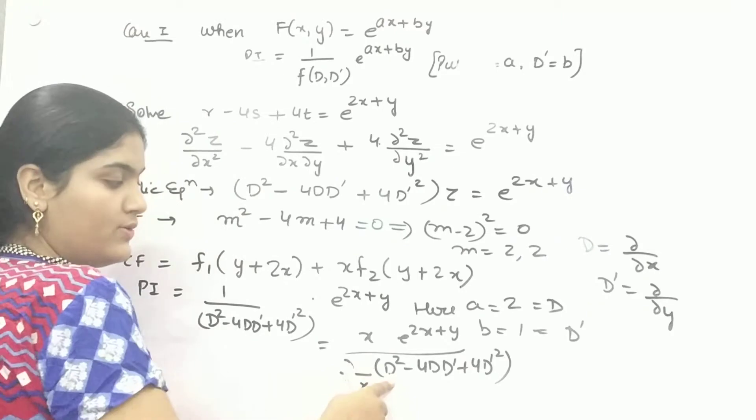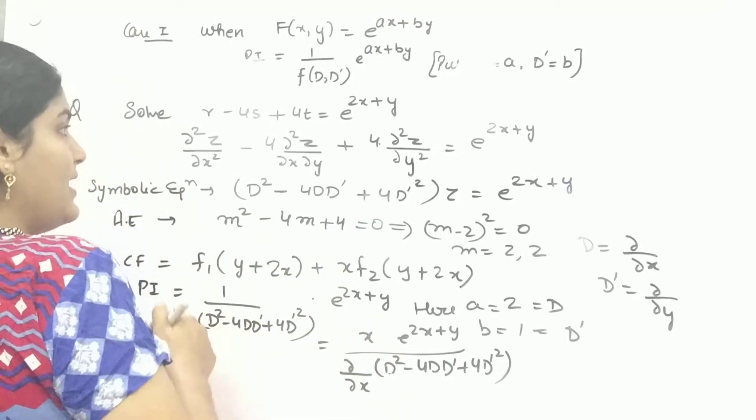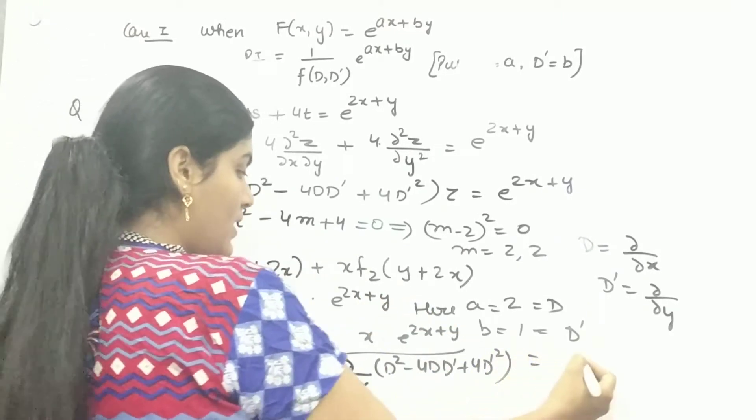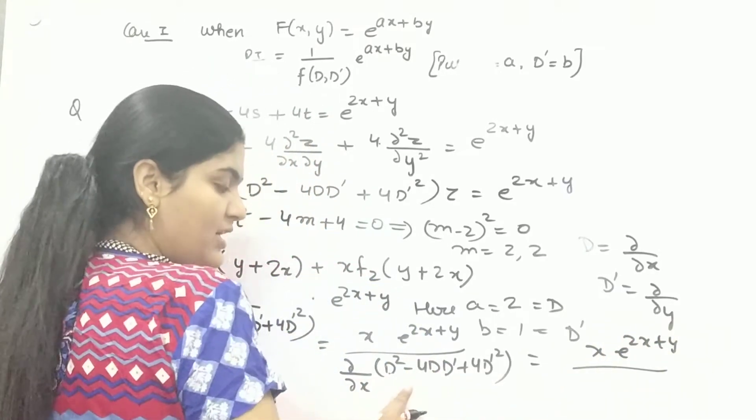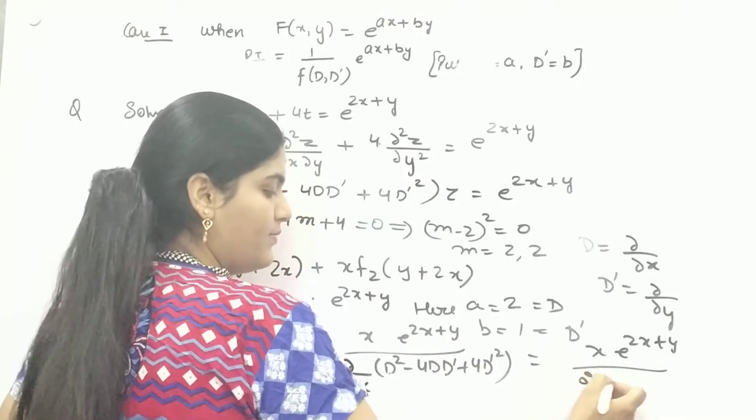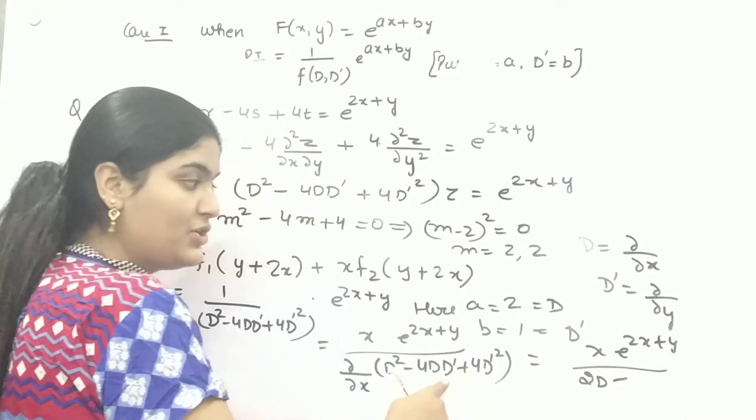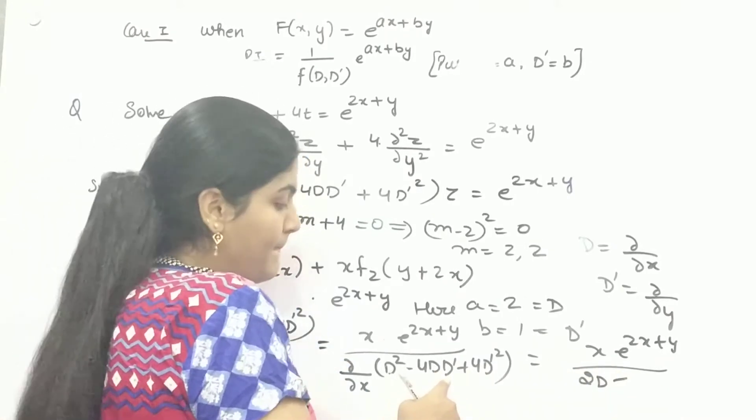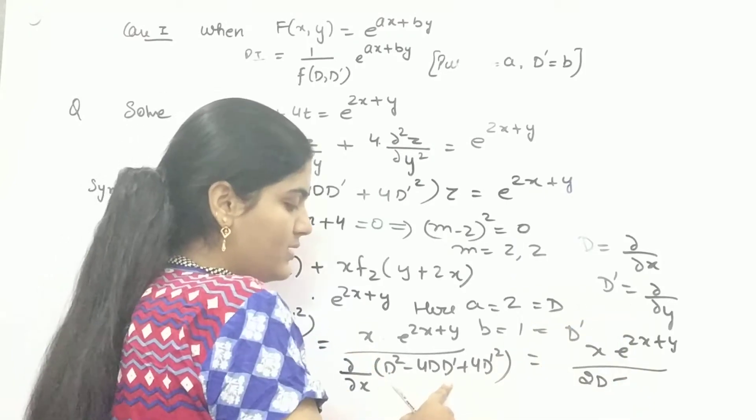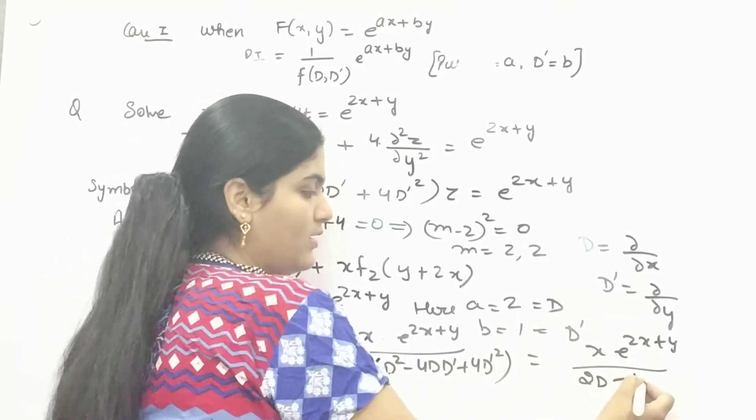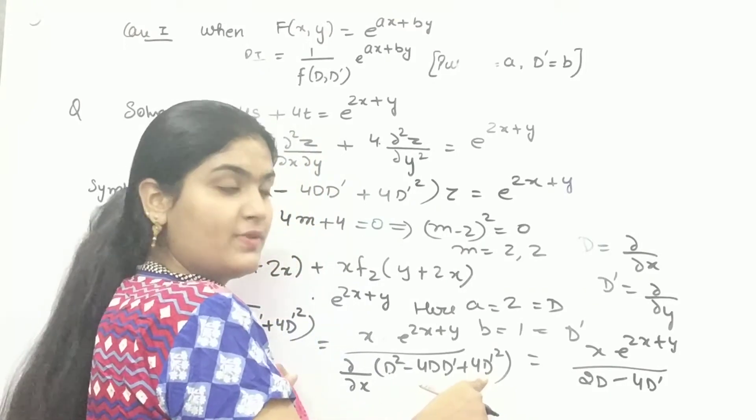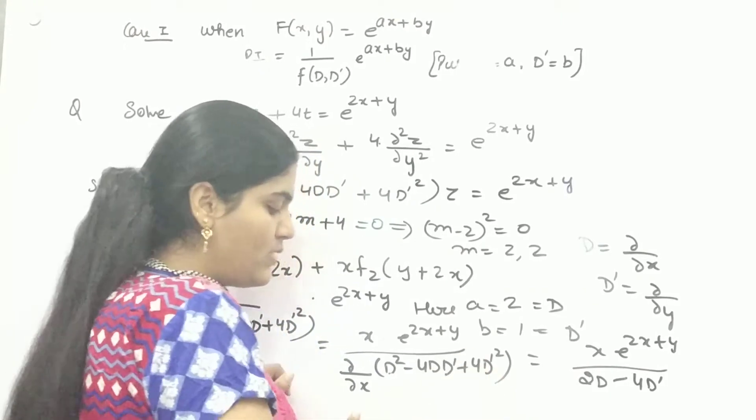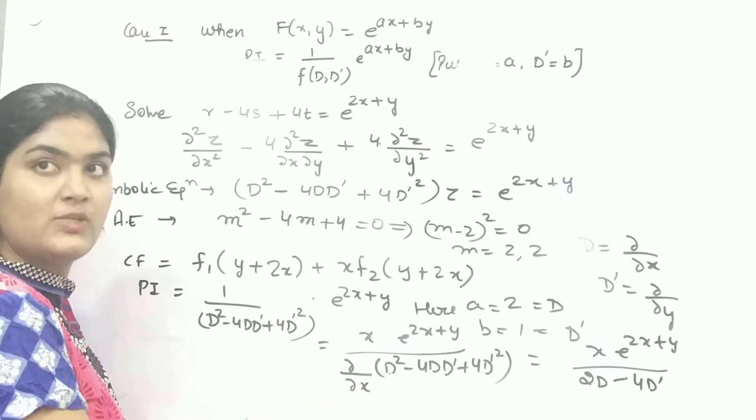So you are doing with respect to X only. So it will be 2D. Let me do it here. X into E raised to the power 2X plus Y. Partial differentiation, so 2D minus 4D dash is in term of Y. So it is constant and for D it will be 1. And D dash is the partial differentiation with respect to Y. So it is zero because you are differentiating it with respect to X.